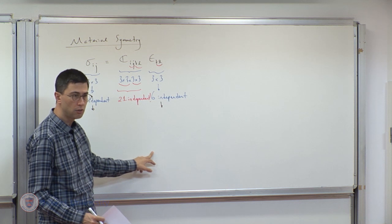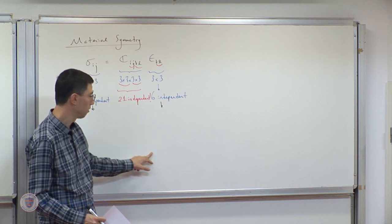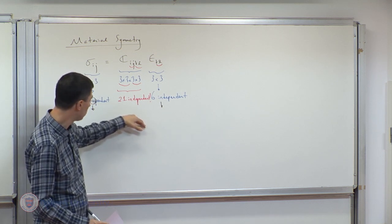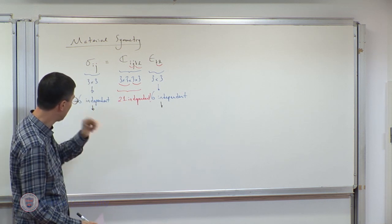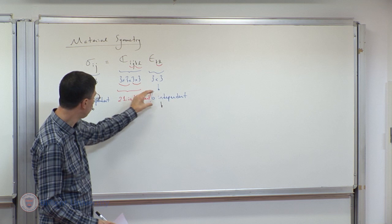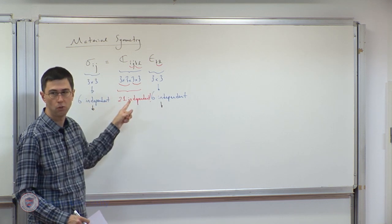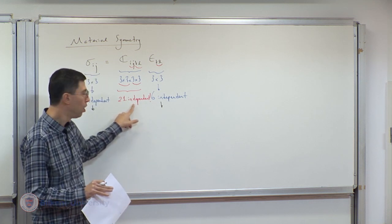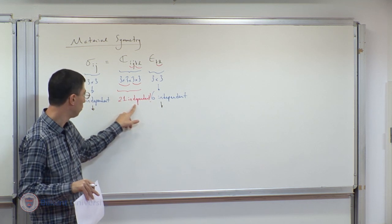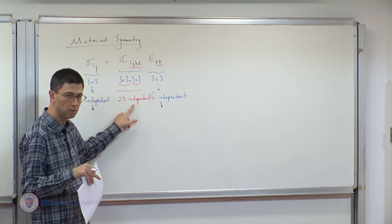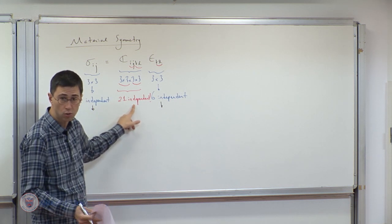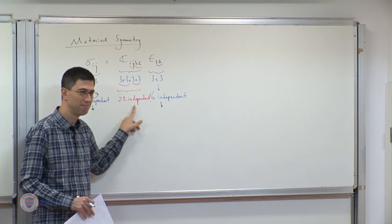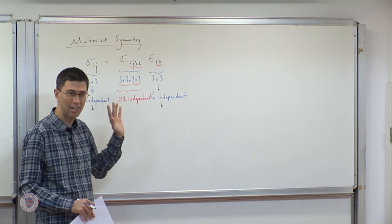The maximum possible is 21 independent components, but depending on the particular material, the number in practice could be much less — as little as two. The number of independent constants depends on material symmetry.